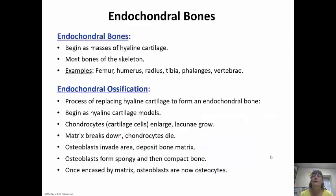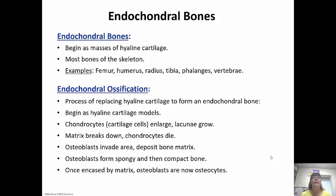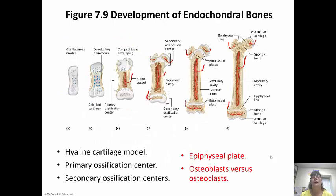Endochondral bones begin as masses of hyaline cartilage — most of the bones of the skeleton are formed this way, including the humerus, radius, and phalanges. The whole process basically replaces the hyaline cartilage model skeleton we have as a fetus. The chondrocytes enlarge, the lacunae start to grow, the matrix breaks down, and the chondrocytes die. Osteoblasts then invade the area, deposit bone matrix, form spongy and then compact bone, and once encased by the matrix, they mature into osteocytes.